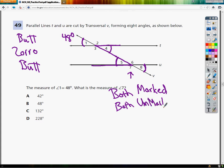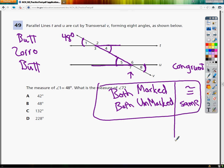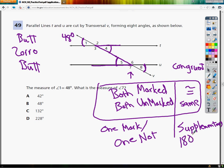That means they're the same. So both marked, both unmarked, they're the same. They're congruent. So two and six have the same value. So do one and eight. Now one and two do not have the same value. If one is marked and one is not, one mark, one not, it means that they are supplementary, or they're equal to 180 when you add them together. Sum equals 180.